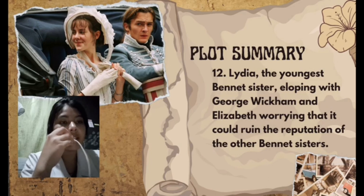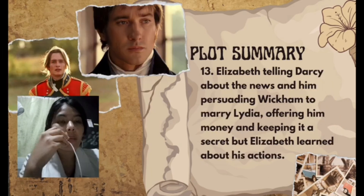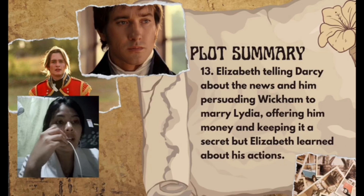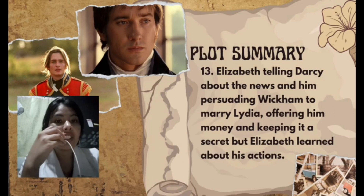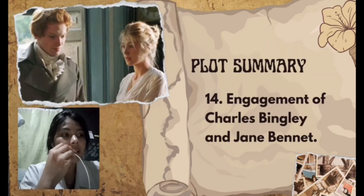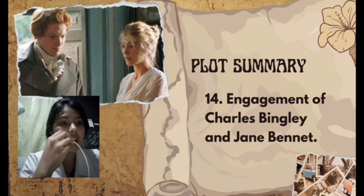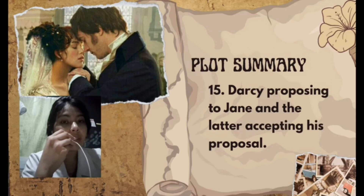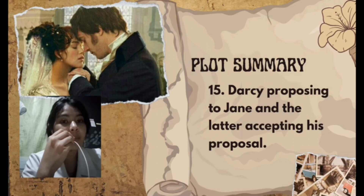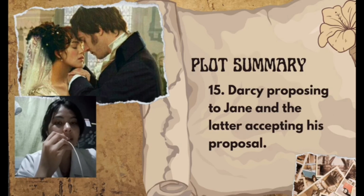Next, Lydia, the youngest Bennet sister, elopes with George Wickham, and Elizabeth worries it could ruin the reputation of the other Bennet sisters. Elizabeth informs Darcy about the news, and he persuades Wickham to marry Lydia by offering him money — keeping it a secret — but Elizabeth learns about his actions. At the same time, Charles Bingley and Jane Bennet get engaged. Finally, Darcy proposes again to Elizabeth and she accepts his proposal. And that's the story of how Elizabeth Bennet and Fitzwilliam Darcy overcame their pride and prejudice against each other.